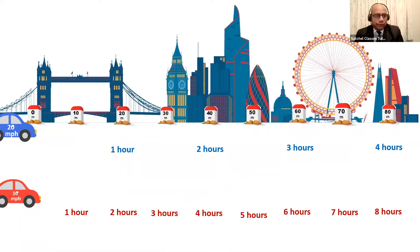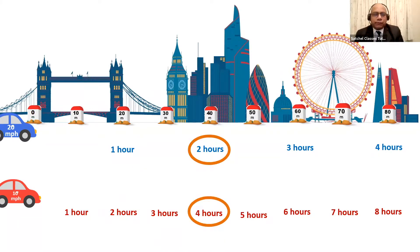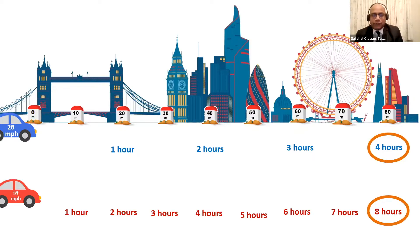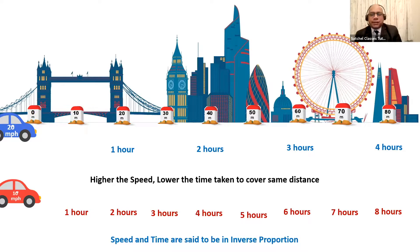Let's take one more situation. We have two cars: one traveling at 10 miles per hour, the second at 20 miles per hour. If you look at the time taken to cover the same distance, the distance covered by the faster car in one hour, the slower car covers in two hours. The distance covered by the faster car in two hours, the slower car takes four hours — more time. As the speed increases, the time taken to cover the distance decreases, or vice versa. That's why speed and time are said to be in inverse proportion.